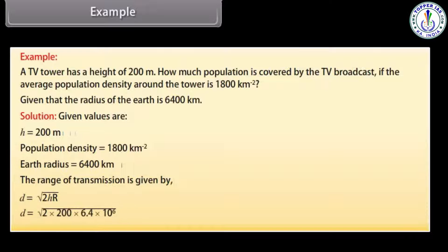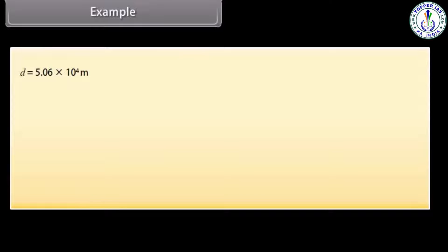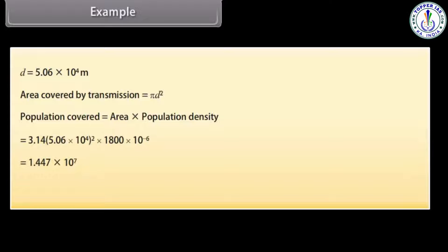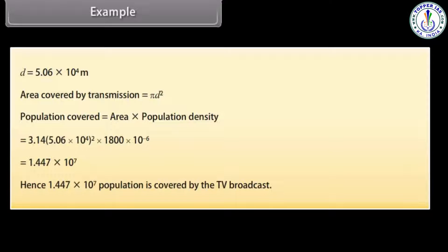Putting in the values, we get D = 5.06 × 10⁴ m. Area covered by transmission = πD². Population covered = 1.447 × 10⁷. Hence, 1.447 × 10⁷ people are covered by the TV broadcast.